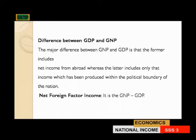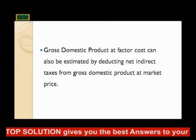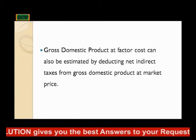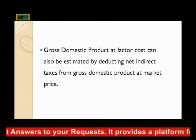The net factor from abroad can be expressed as GNP minus GDP. The gross domestic product at factor cost is also the sum or total of the compensation of employees, operating surplus, and mixed income held by the factors of production in an accounting year, plus depreciation or consumption of fixed capital. The GDP at factor cost can also be estimated by deducting the net indirect tax from gross domestic product at market price.